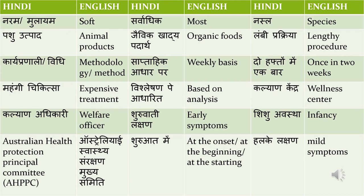The Australian Health Protection Principal Committee translates as 'Australiai Swasthya Sanrakshan Mukya Samiti'. When you see large names like this, don't panic — just translate each word: 'swasthya' is health, 'sanrakshan' is protection, 'mukya' is principal, and 'samiti' is committee. Since it is the name of a committee, you can also use it as is, but translating gives a better impression. 'Shiruvat mein' means at the onset or at the beginning — doctors often say 'shiruvat mein aapke bahut halke lakshan hote hain is bimari ke'. 'Halke lakshan' means mild symptoms.